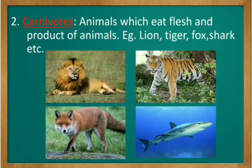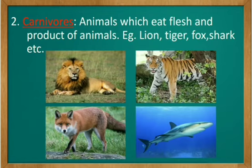Next is carnivore animals — animals which eat flesh and products of animals. Examples: lion, tiger, fox, shark, etc. These animals do not eat plants. What do you mean by products of animals? It means egg and meat which is given by animals. To tell you in a simple way, they are non-vegetarians only; they do not eat plants and products of plants. See the images below — there is a lion, tiger, fox and a shark.